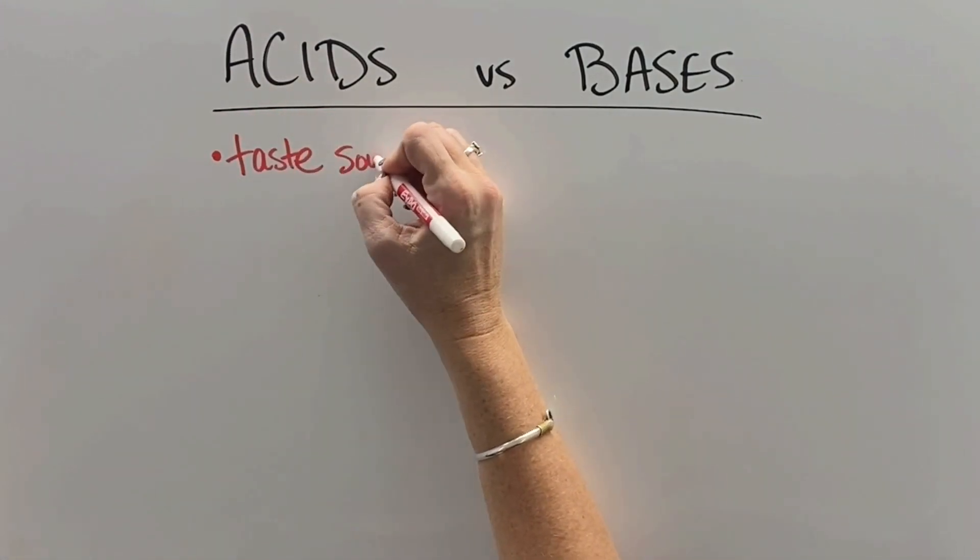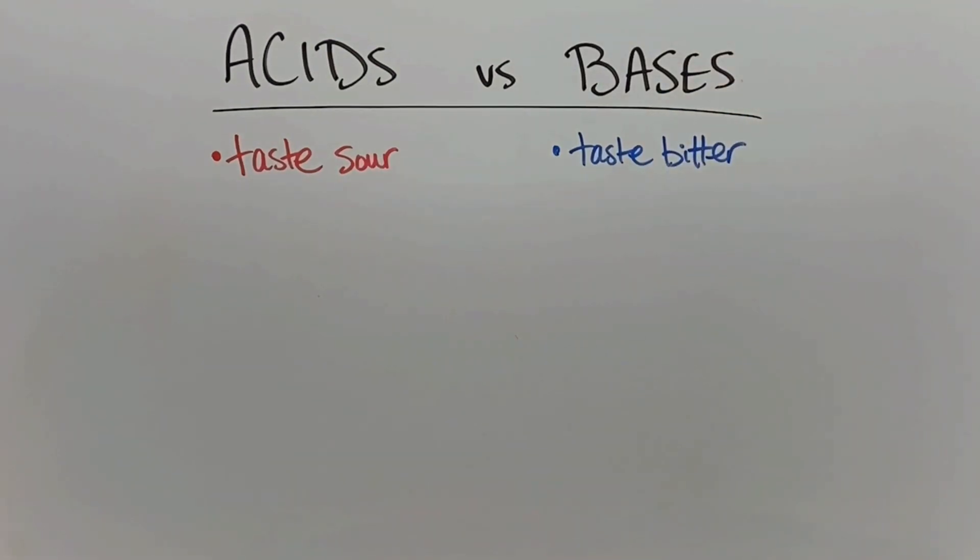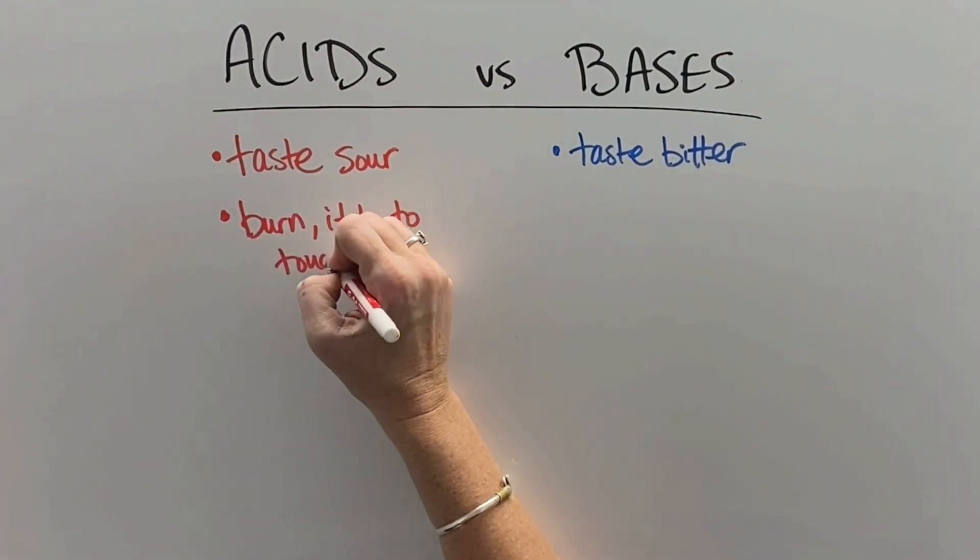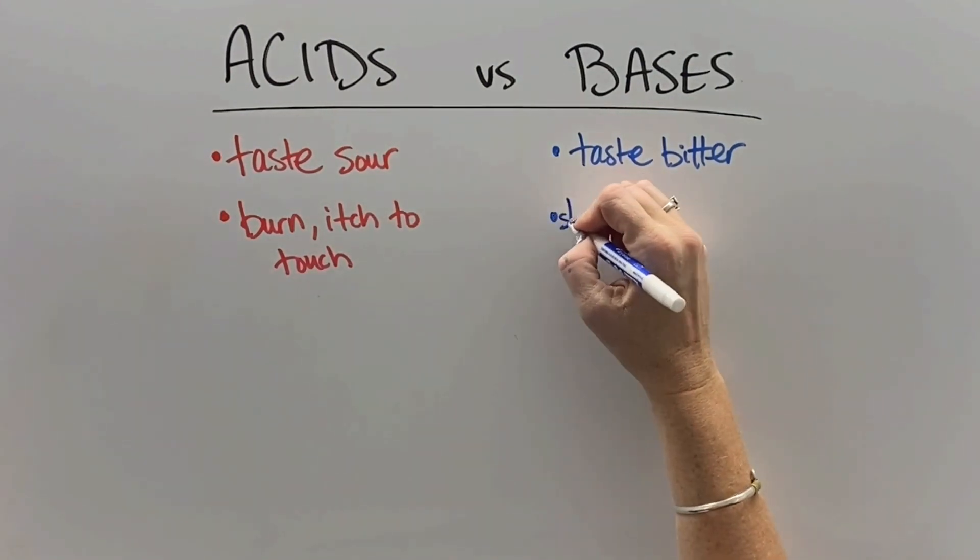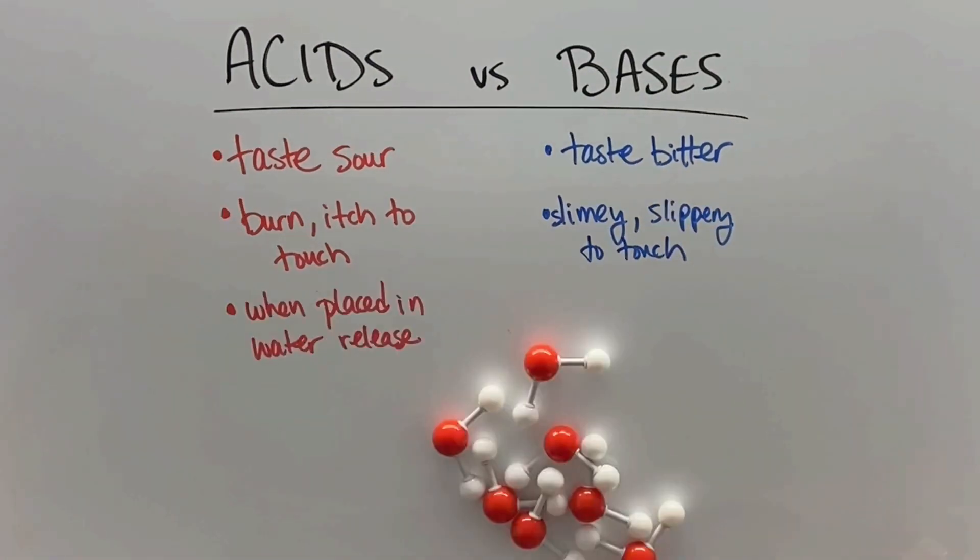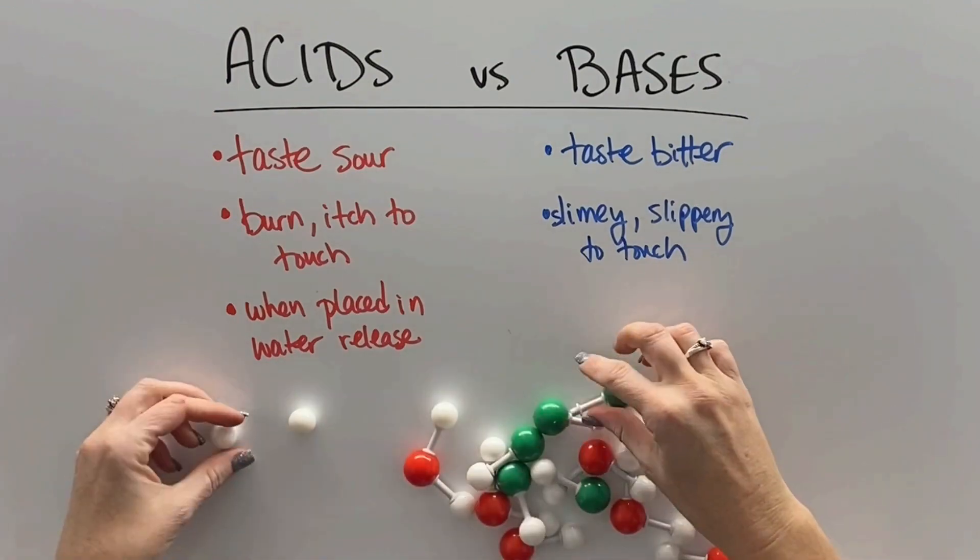We've all heard about acids, but today we're going to learn about their opposite, bases, too. Acids typically taste sour and bases taste bitter. Acids burn and itch when you touch them, and bases typically feel slimy and slippery. In another video, you're going to see some testing to figure out which things are acids and bases, but for now, we're just going to learn how they behave.